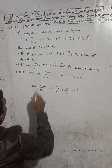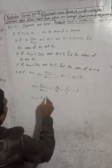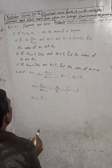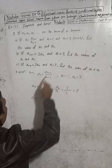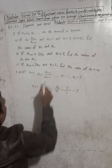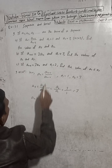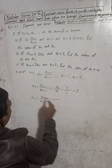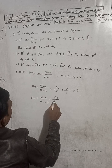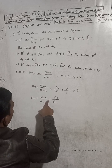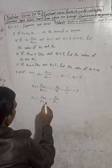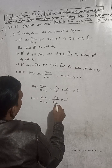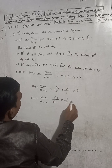Now to find a4, we put n equal to 4 in the formula. So a4 equals a_(4-1) divided by a_(4-2), which is a3 divided by a2. a3 value is 3 and a2 value is 3, so 3 divided by 3 equals 1. Therefore a4 equals 1.